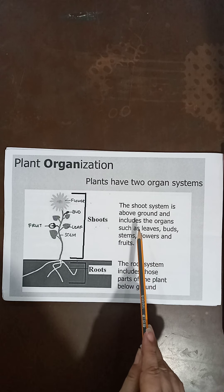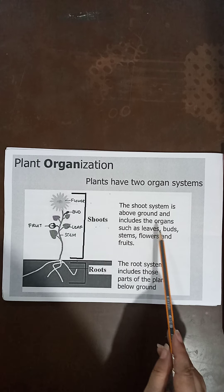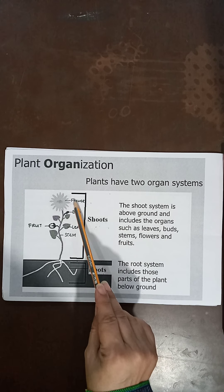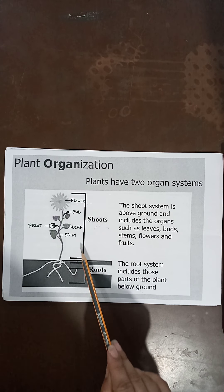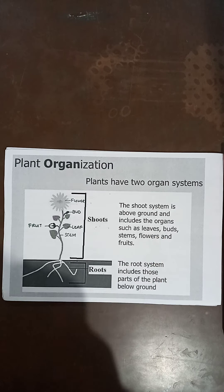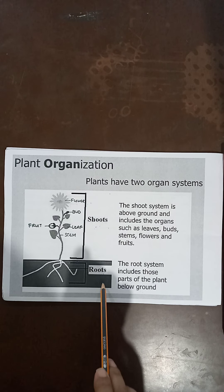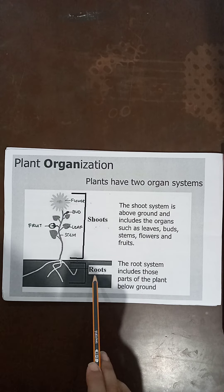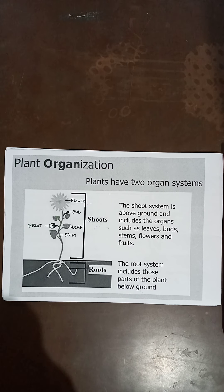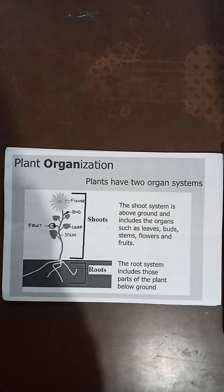The main function of the shoot system is that it includes and holds all the different organs of the plant — that is the leaves, buds, stem, flowers and fruit. The main function of the root system is that it absorbs water from under the ground and transports it to the above part of the plant.